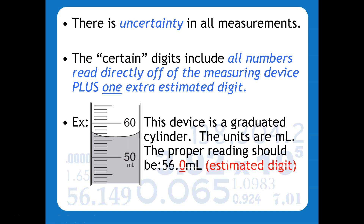So in this case we would say it would be 56.0. Now you may say 56.1 milliliters, and that would be absolutely fine — that estimated digit will vary from person to person. Even if you said 56.9, technically it's an estimated digit, although you probably need to work on your estimation scales. Every time you're working in the laboratory, anytime you have to make a measurement, you are going to read every digit that you can off of the device and then estimate one more.